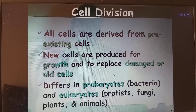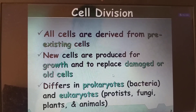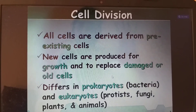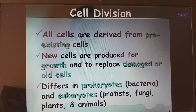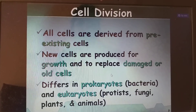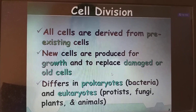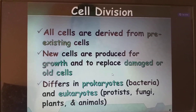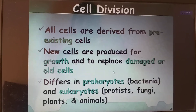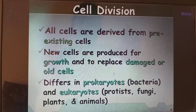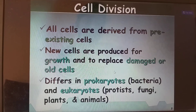Cell division differs in prokaryotes, which are bacteria, and eukaryotes. Under eukaryotes, you will have protists, fungi, plants, and animals. So cell division will be different in prokaryotes and eukaryotes.